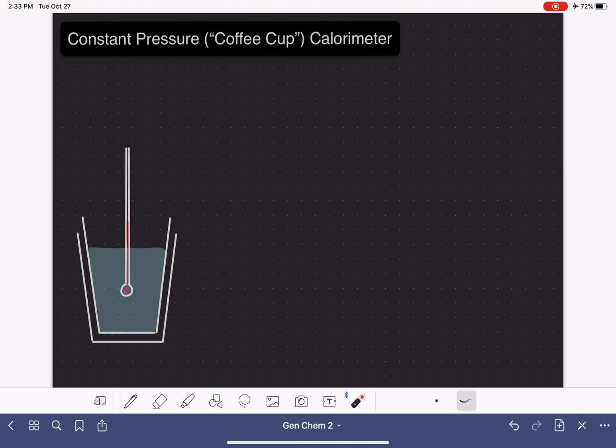In this video I'm going to be talking about one type of calorimeter called a constant pressure calorimeter. These are also referred to as coffee cup calorimeters. This is a schematic or a drawing of a coffee cup calorimeter.